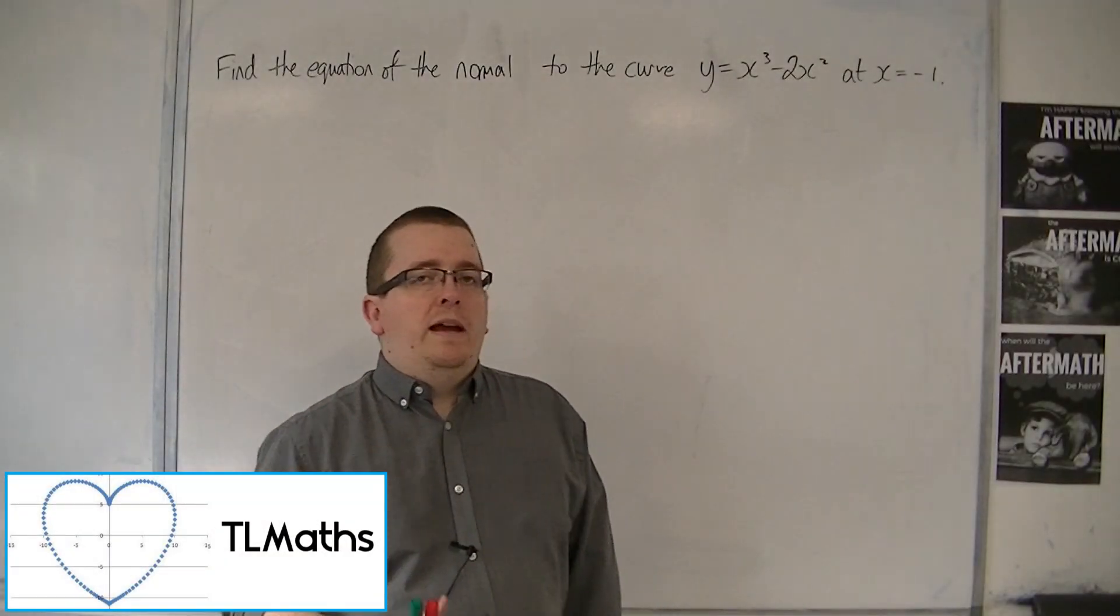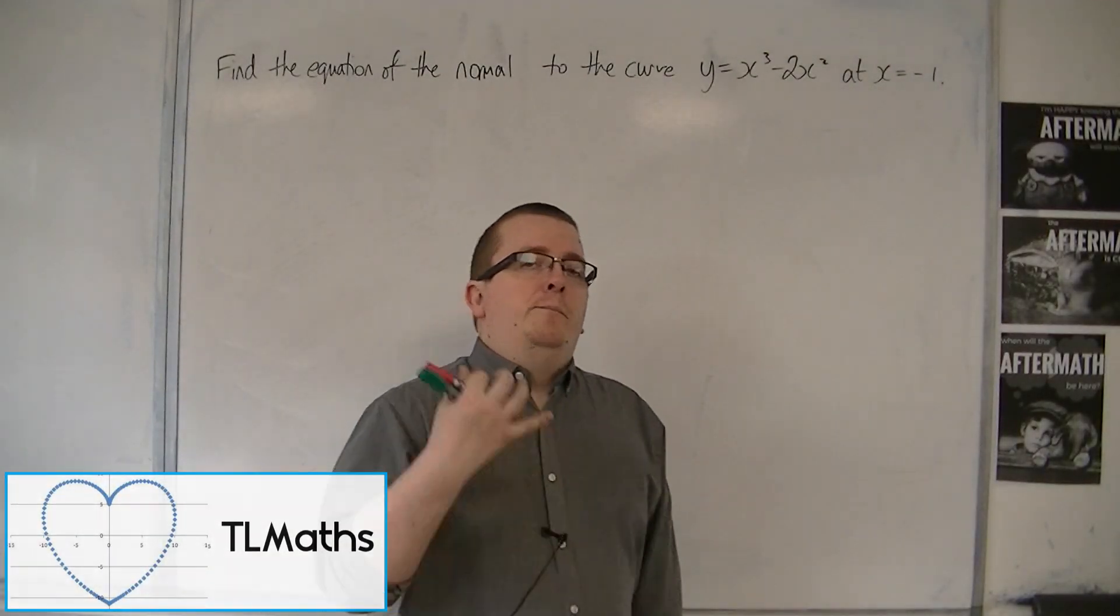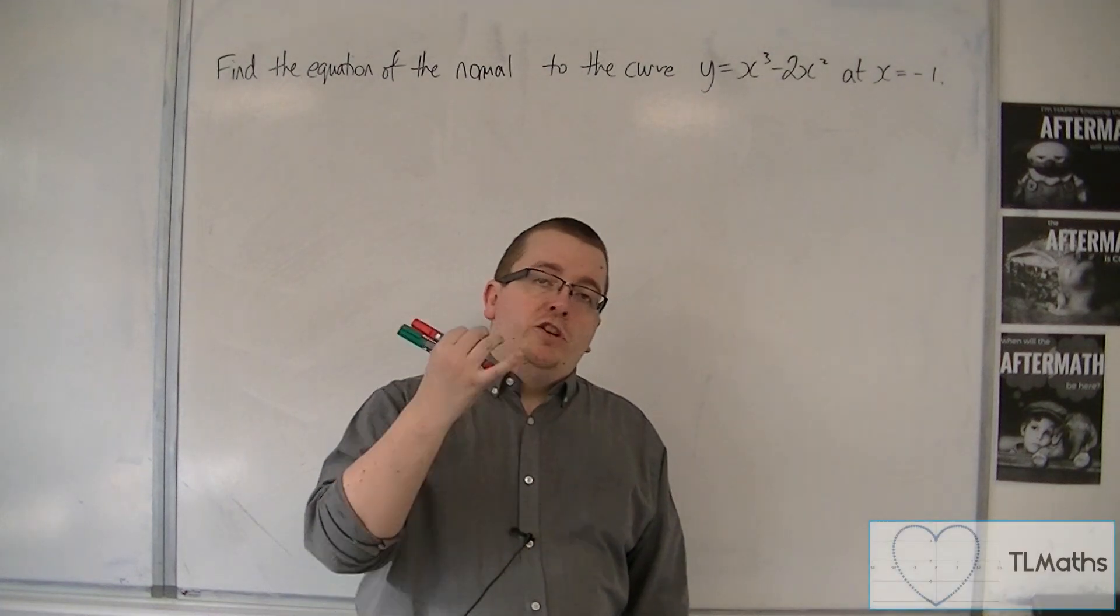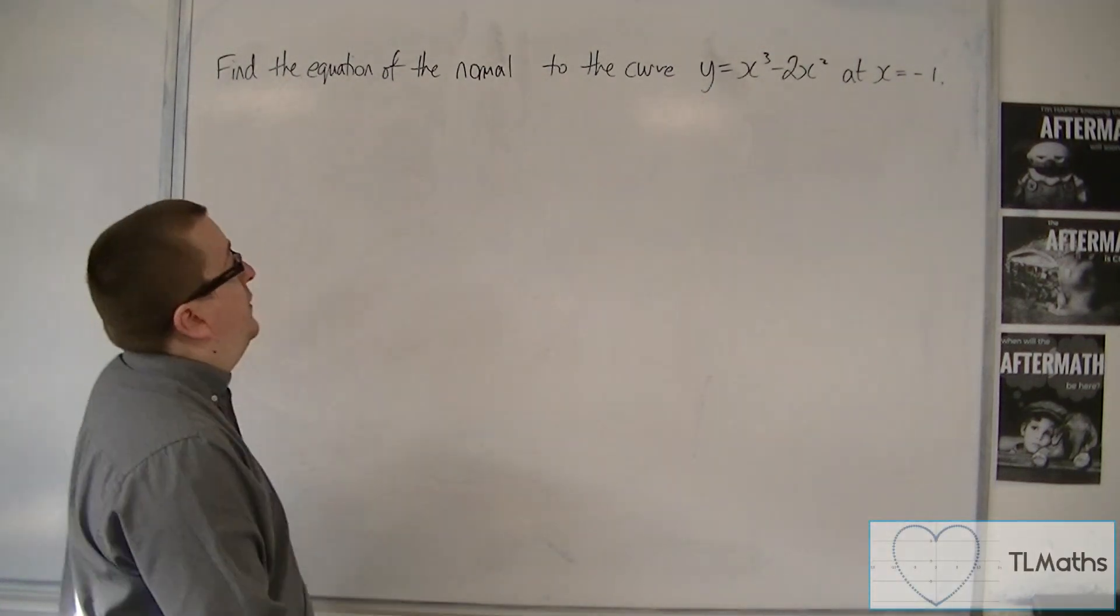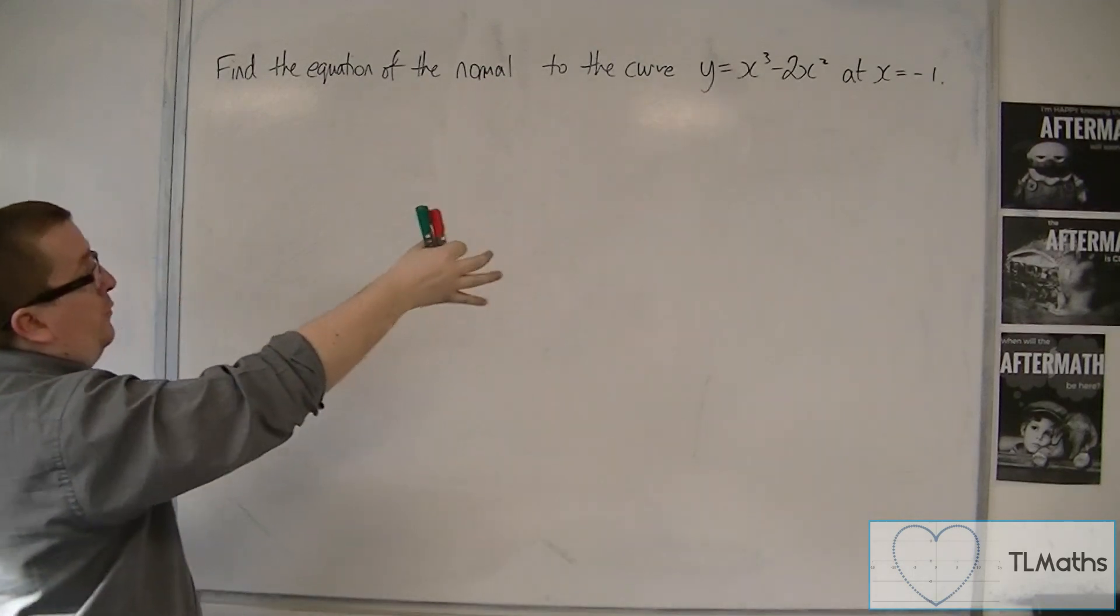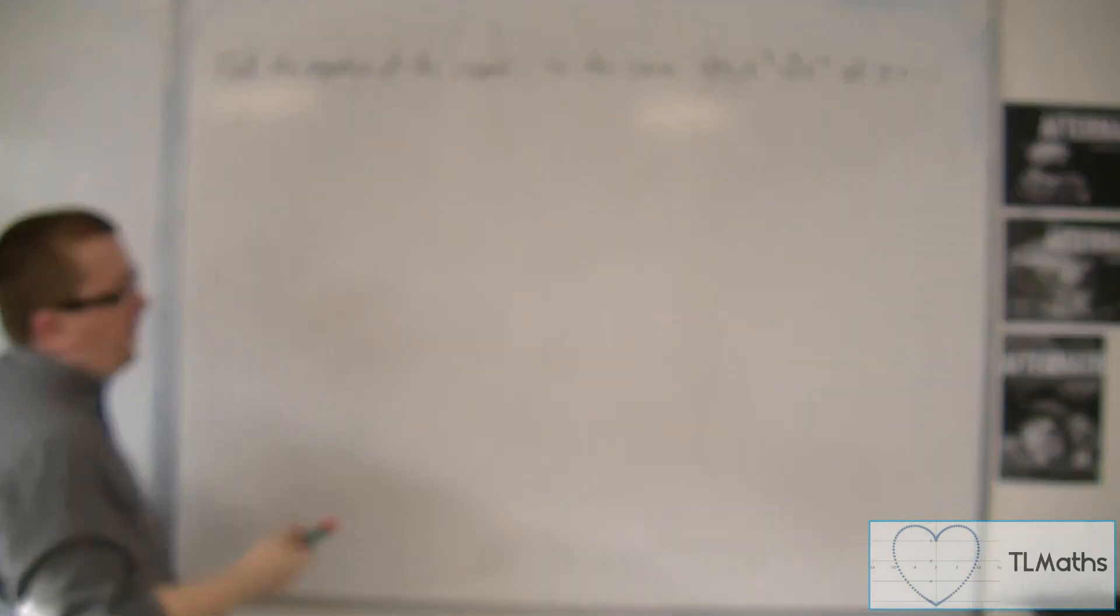We're going to work through a similar example to the previous video, but this time we're working out the equation of the normal. So the curve in question is y equals x cubed minus 2x squared.